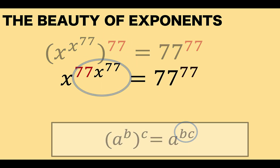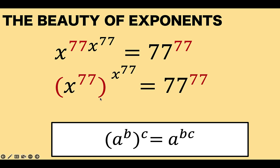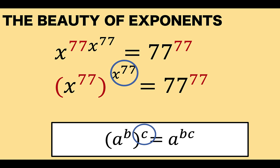The right side is just copied. Now, let's recall again the power-of-power rule of exponents. Looking at the left side of the equation, it is exactly the same form as the right side of this formula. Our base is a, our b is 77, and our c is x raised to 77. Applying this formula, we now have: 77 times x raised to 77 is our bc, and we want to write it so the base is x with exponent b equal to 77, and c equal to x raised to 77.